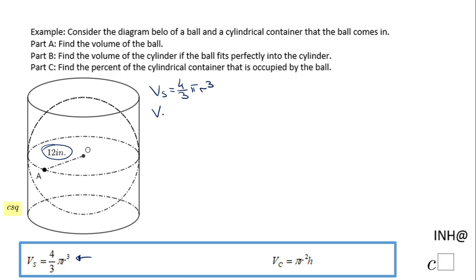So we have 4 over 3 π times 12 cubed. 12 cubed is 1728, so the volume of the sphere will be... we can times this 1728 by 4 and divide by 3 if you want, or you can simplify. The final answer for the volume of the sphere is 2304π cubic inches.